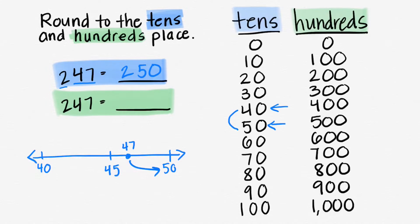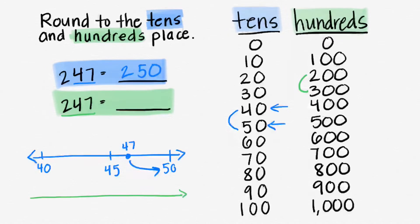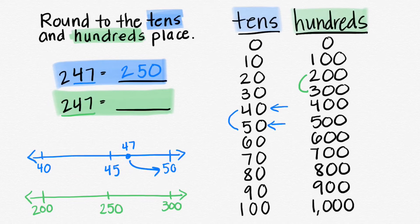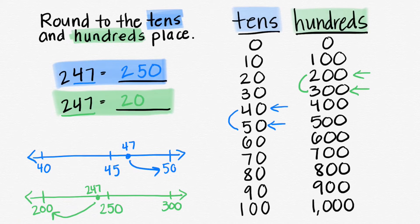But 247 isn't close to 50 — it's close to 250 because we had the 2 in the hundreds place. Now we have to round 247 to the hundreds place. We need to think: 247 is somewhere between 200 and 300. Let's make our number line: we have 200 on one side, 300 on the other, and halfway between those numbers is 250. Now 247 would be a little before 250. Is it closer to 200 or 300? It's closer to 200, so the answer is 200.